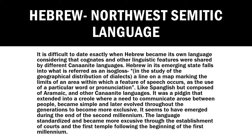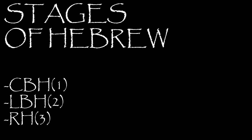Hebrew seems to have emerged during the end of the second millennium. The language standardized and became more exclusive through the establishment of courts at the first temple following the beginning of the first millennium — the temple, the courts, and the law all helped Hebrew become more of itself. Now I want to look at three particular stages of Hebrew: Classical Biblical Hebrew (CBH), Late Biblical Hebrew (LBH), and Rabbinical Hebrew (RH).